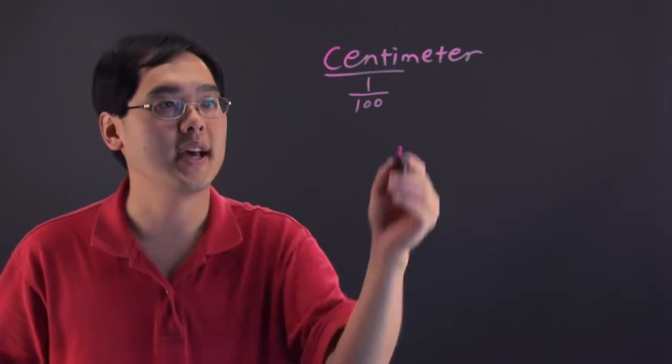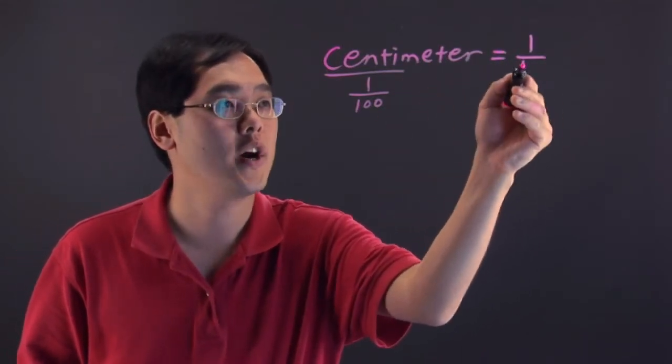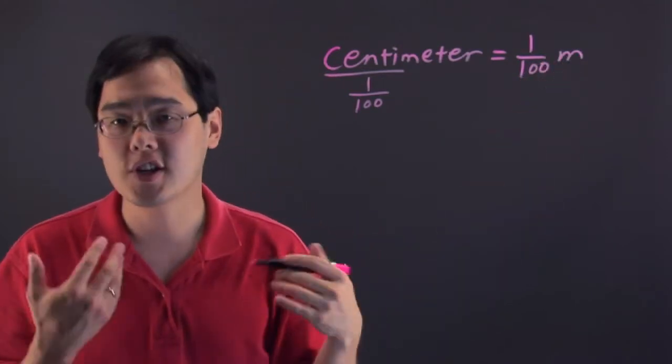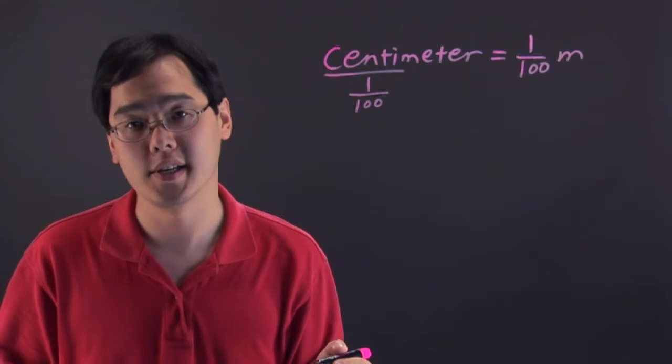So that means one centimeter is actually equal to one-hundredth of a meter itself. That should give you an indicator as to how small a centimeter actually is.